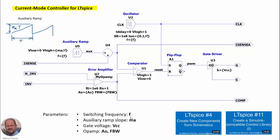The gate voltage VCC that we want to generate for the gate signal, and the parameters of the error amplifier — the DC gain and the 0 dB frequency corresponding to the bandwidth of the amplifier. And then from this schematic, we can create our new component for LTSPICE.